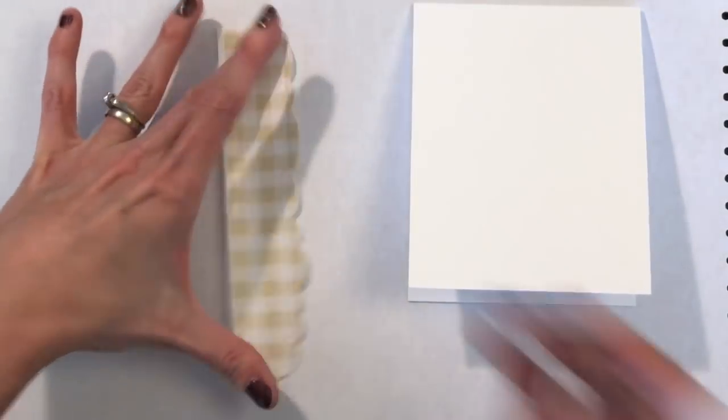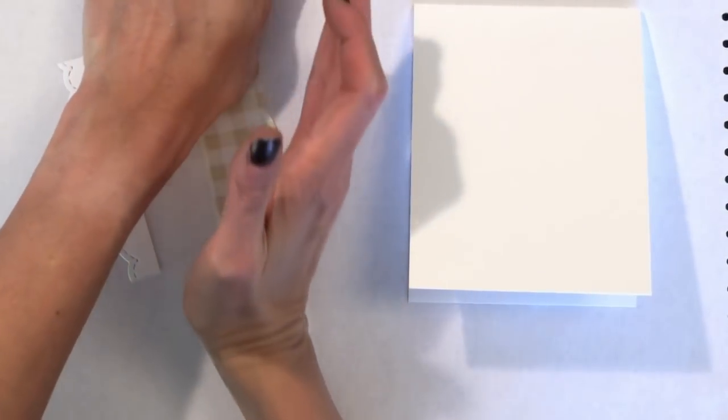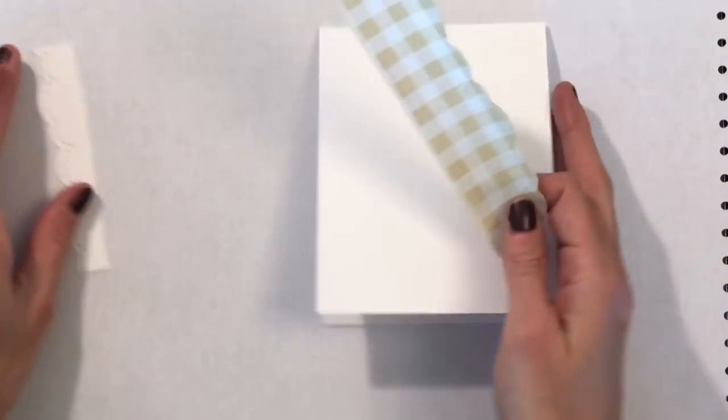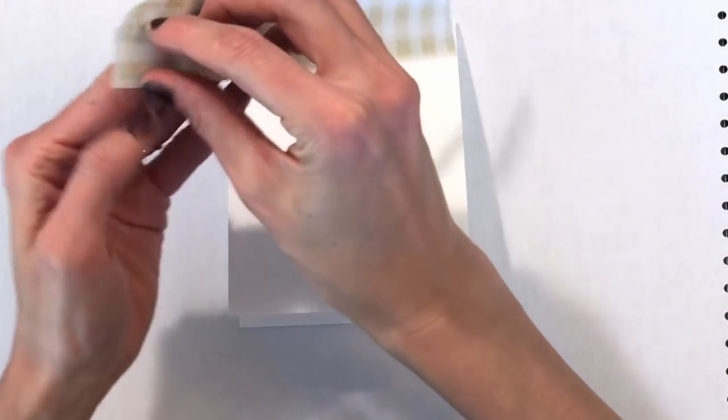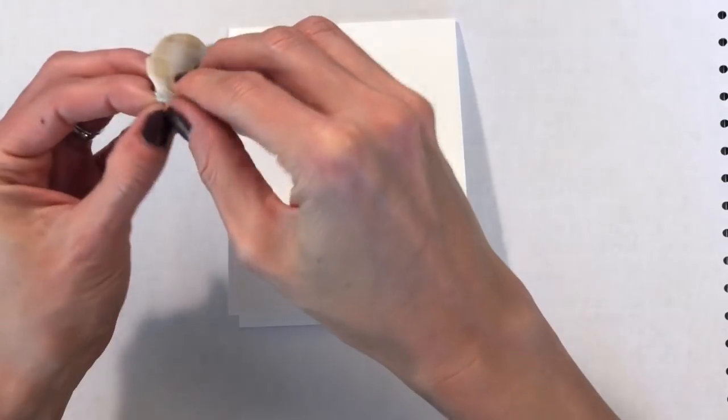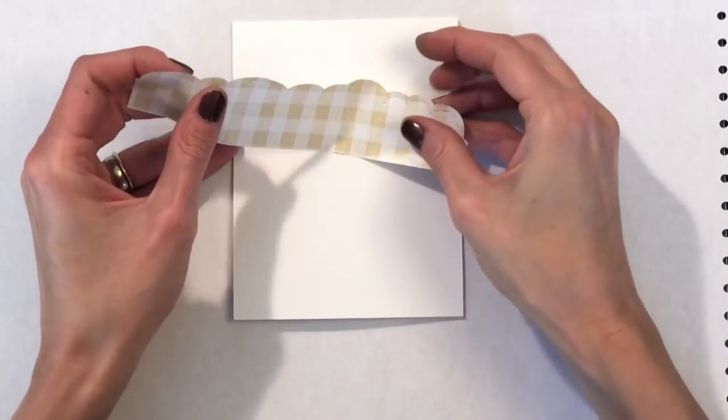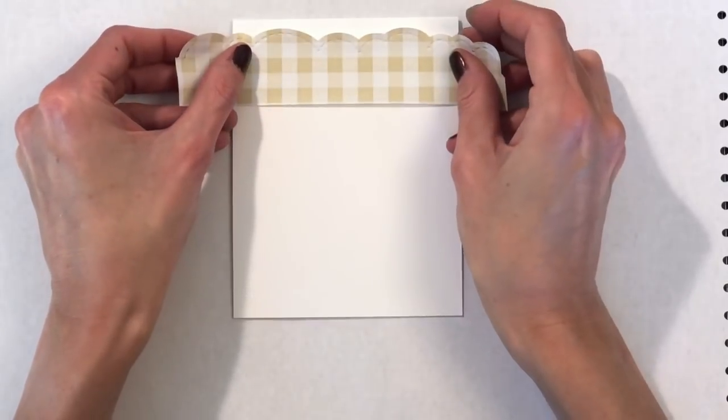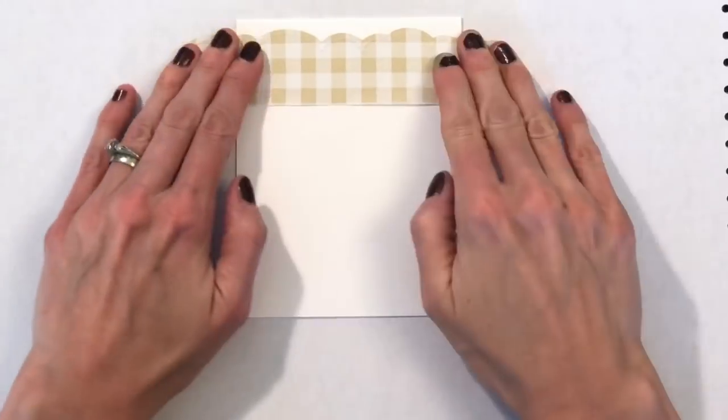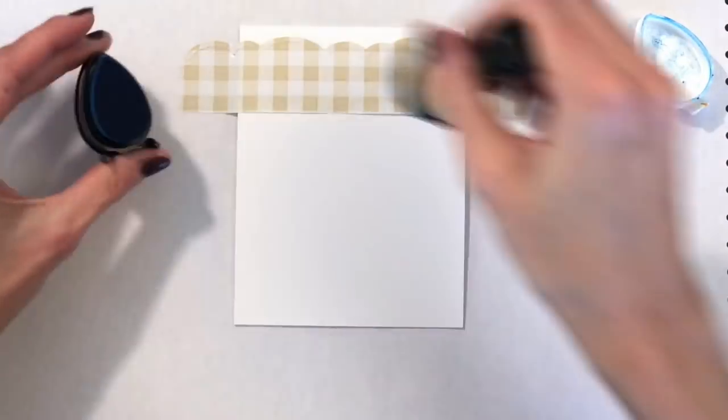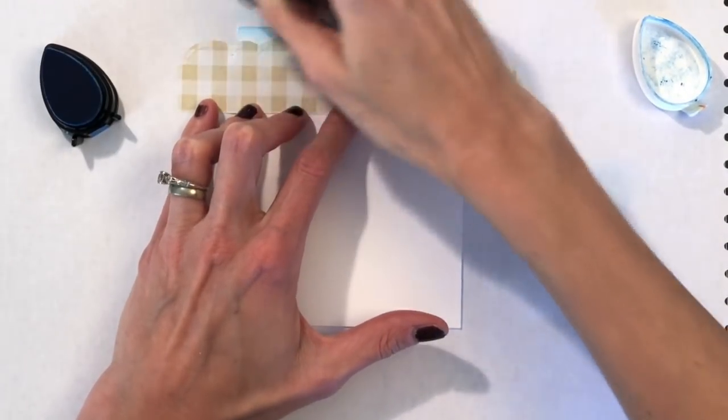So now I'm going to make my background. So I have my A2 top folding card base here as well as my mask. And I cleaned it off real quick with a baby wipe because I did use it earlier for the yellow for the panel behind the nine grid. So I wanted to remove that yellow ink so I didn't kind of make green ink on my panel.